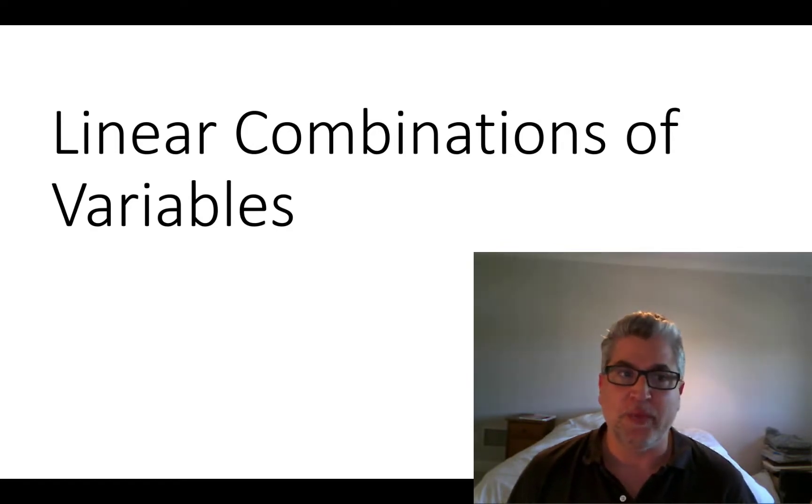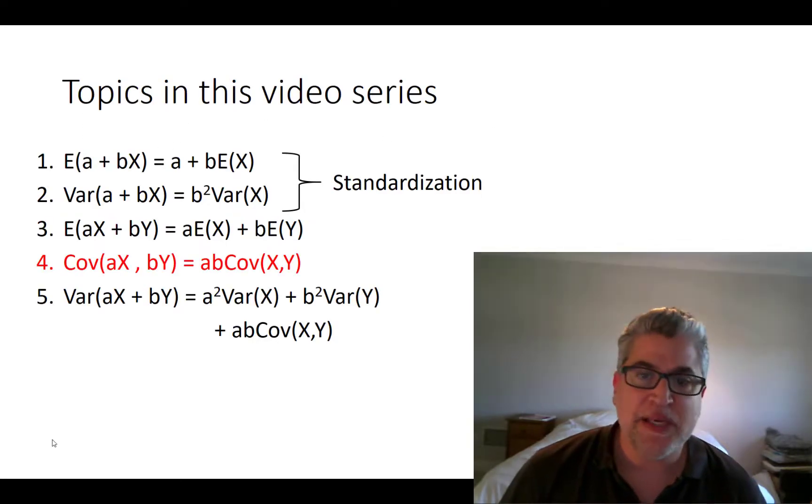What happens when we multiply a random variable by something, magnifying it? What happens to its mean, to its variance? And now, what happens if we do that to pairs of variables, magnifying them by different amounts? How does that affect covariance and variance? In the grand scheme of things, we'd like to analyze something like a portfolio of different stocks.